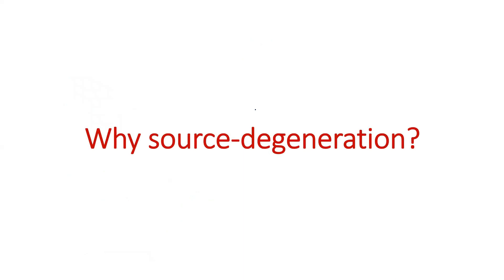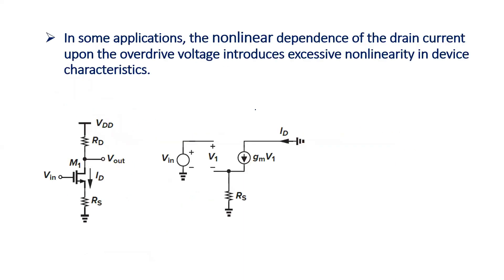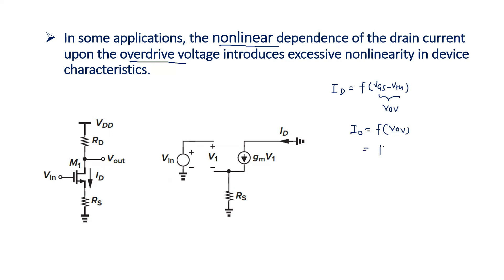Why use source degeneration? There is a nonlinear dependence of drain current on overdrive voltage. Drain current is a function of VGS minus VTH, the overdrive voltage. Specifically, ID equals Kn times V_overdrive squared — a nonlinear function. This nonlinearity introduces excessive nonlinearity in the device characteristics.